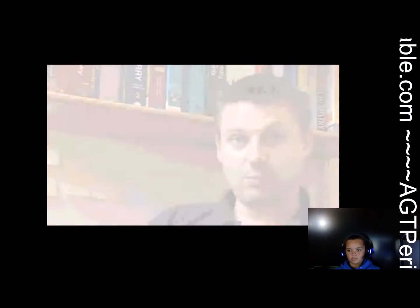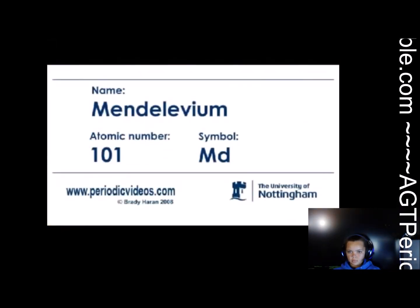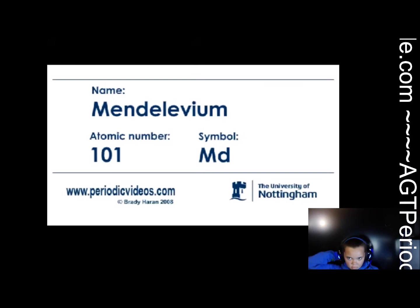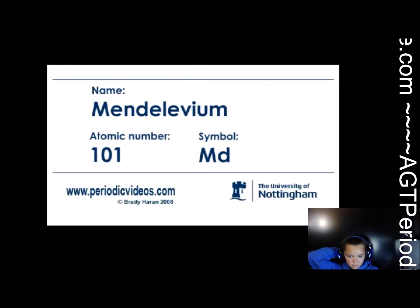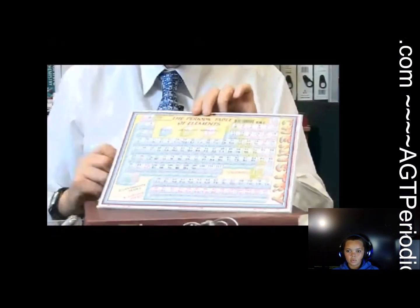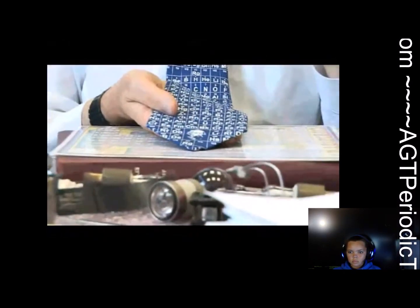All I really know about Mendeleevium is that it's probably named after Mendeleev, who started the periodic table — he like started that whole thing. Mendeleevium is named after one of the most important people as far as the periodic table is concerned, which is Dmitry Mendeleev. In Russia, the periodic table is called the Mendeleev table, and you can see here on my tie I've got a picture of Mendeleev.